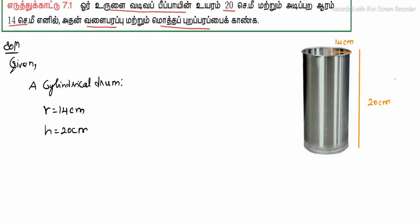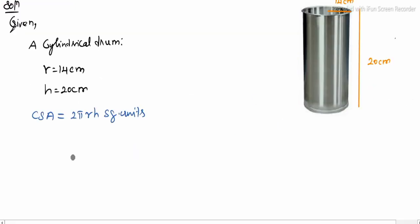So the curved surface area equals 2πrh square units. Value is replaced: 2 into π is 22 divided by 7 into r is 14, h is 20. So, 1 times 2 times...